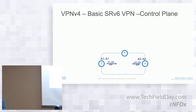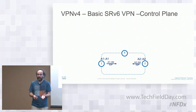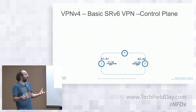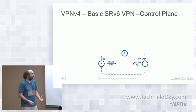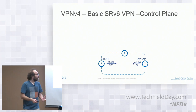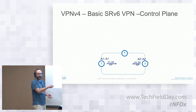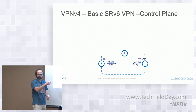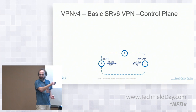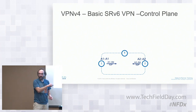Layer 3 VPN with SRV6 (no MPLS): the IGP domain runs IS-IS or OSPF, and all routers advertise their locators—e.g., A1::/64 and A2::/64. Everyone in the IGP domain knows how to reach any locator. CE routers connect via BGP (AFI 1, SAFI 1 for IPv4), advertising their prefixes.